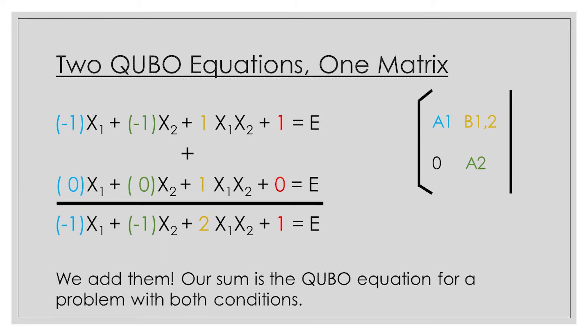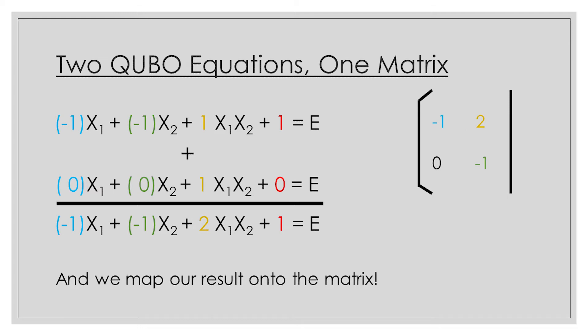Yup, that's it. All you have to do is add the a1 values together, the a2 values together, and the b12 values together. We use the sums for each variable to create our combined QUBO equation, and then map it onto the matrix. And we're done.